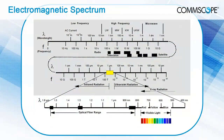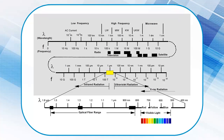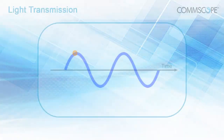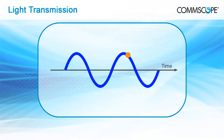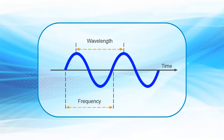The optical spectrum includes frequencies spanning 10 to the 12th to 10 to the 17th hertz. Fiber optics extends the realm of communications to a subset of those frequencies from 1.6 times 10 to the 14th hertz to 3.5 times 10 to the 14th hertz, the region just below visible light. This optical spectrum is usually discussed in terms of wavelengths, not frequency. Wavelength is a measure of the distance between consecutive cycles of a repeating waveform,